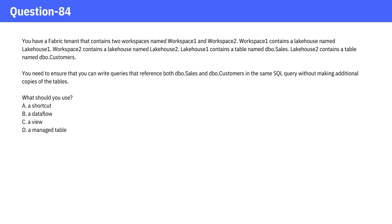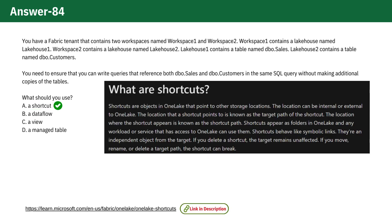Pause the video and give it a think and check the answer. The correct answer is A, Shortcut. In Microsoft Fabric, a shortcut allows you to reference data from one workspace or lakehouse in another without copying the data. This enables you to query both dbo.sales from Lakehouse 1 and dbo.customers from Lakehouse 2 in the same SQL query seamlessly.